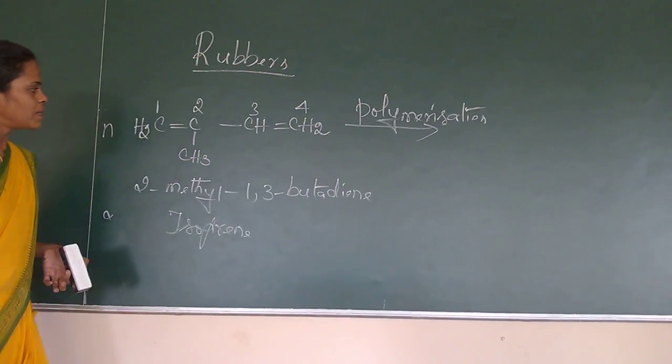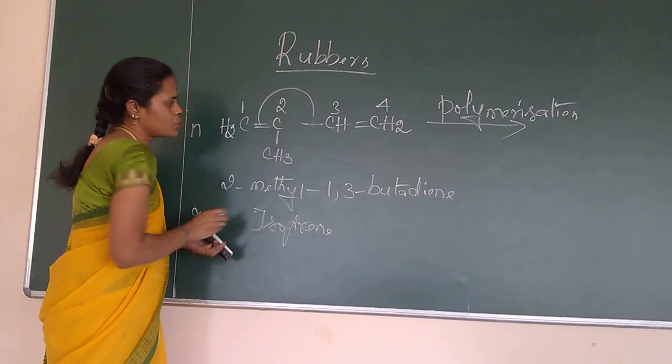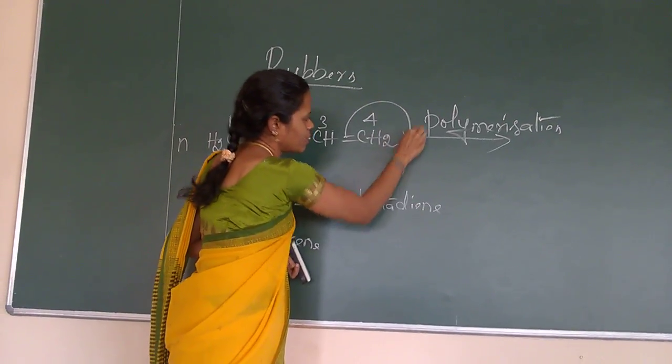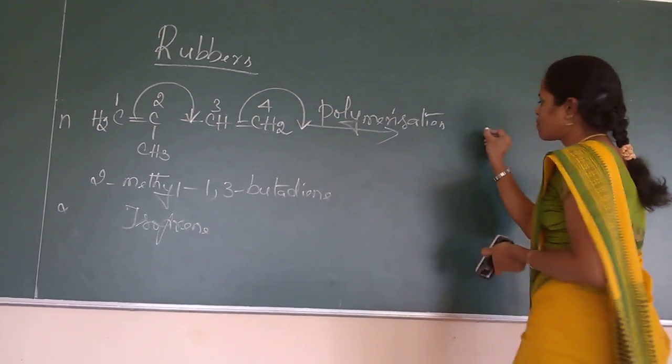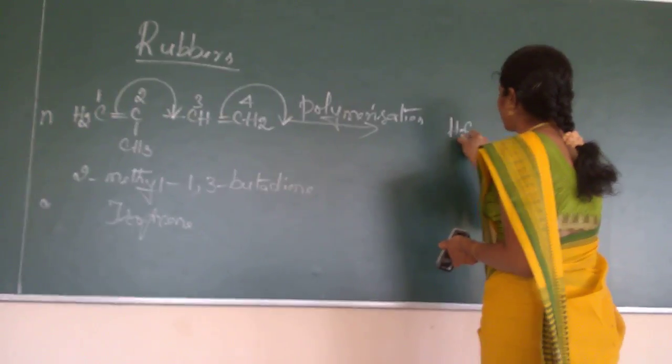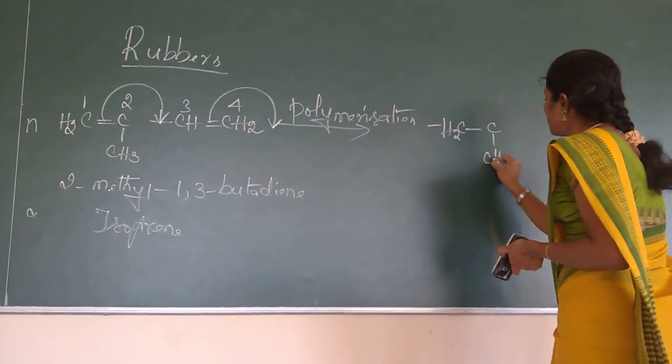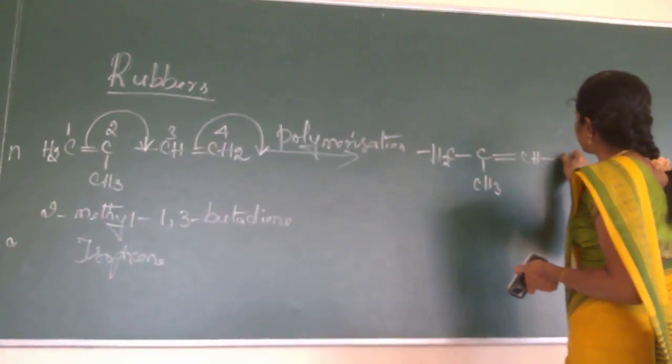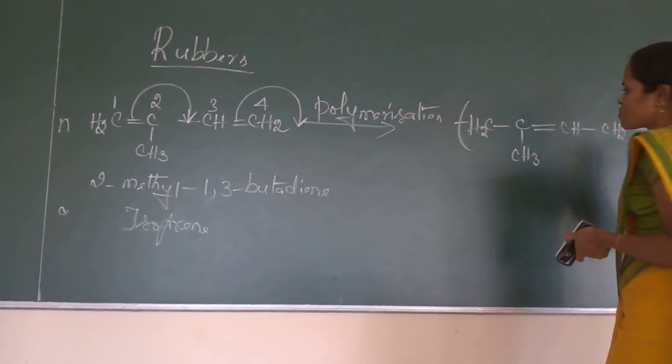Now what will happen? This double bond is getting shifted to this position. And this double bond is getting shifted here. So therefore, I will get a polyisoprene: CH2 single bond, CH3 double bond, CH single bond, CH2 single bond, N times.